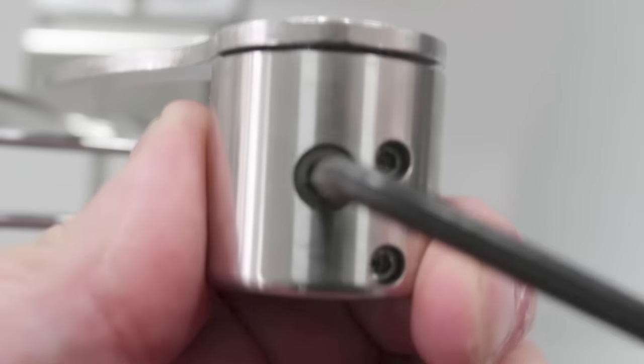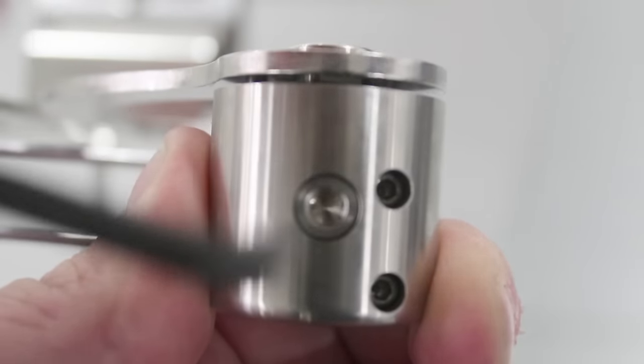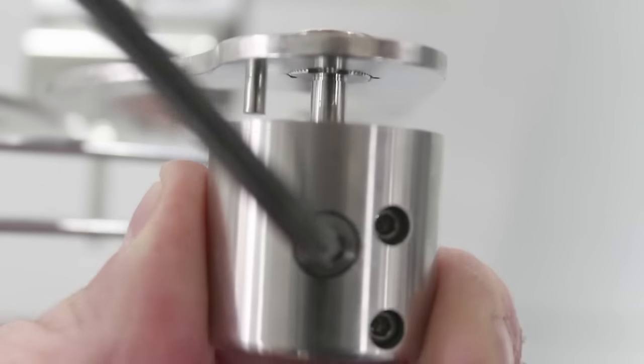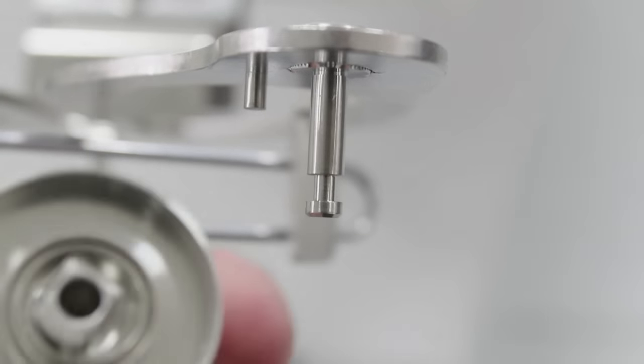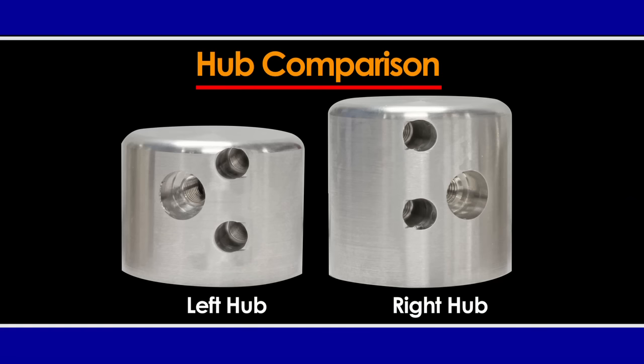To change the springs in the stainless steel ErgoSteel models, first remove the alignment rod from the hub. Next, loosen the hub retaining bolt. Now, you can remove the hub and spring. The stainless ErgoSteel models have two different size hubs. The right side hub is taller than the left side hub.